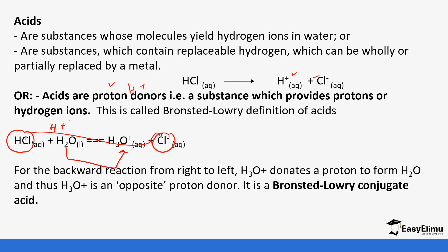If you look at the backward reaction, the hydrogen ions act as a proton donor. But in the forward reaction, hydrochloric acid is the acid — the proton donor. So it depends on which direction of the reaction you are considering.